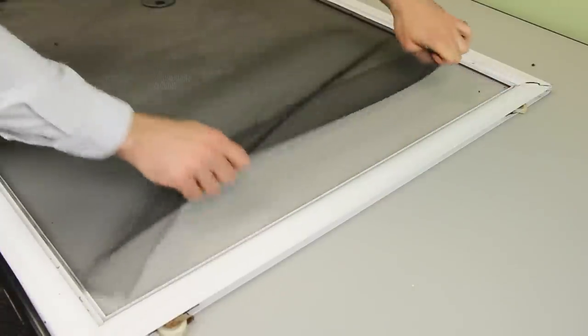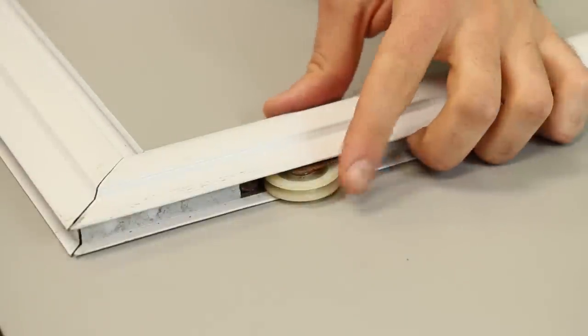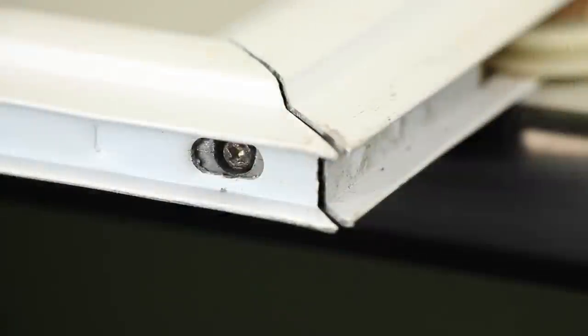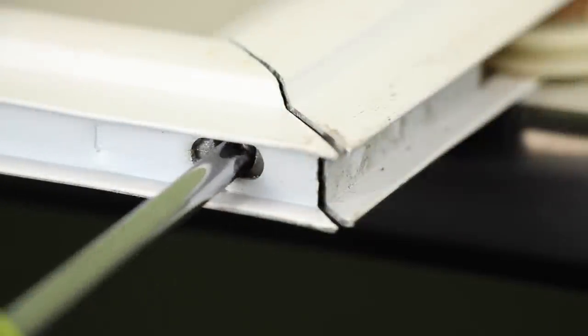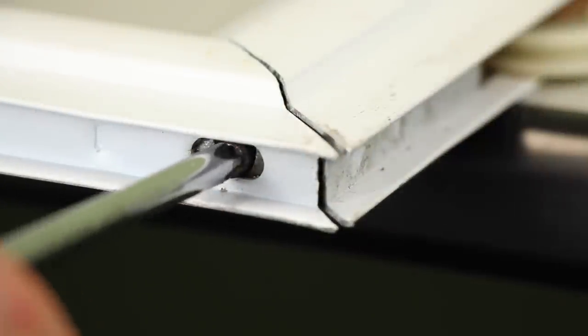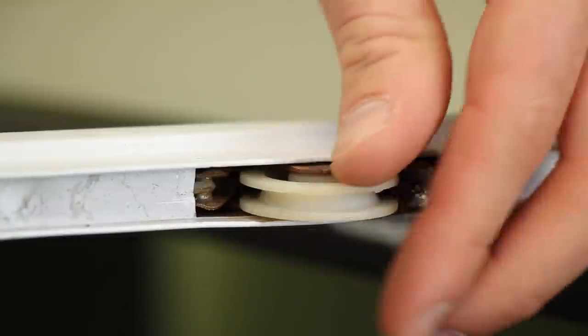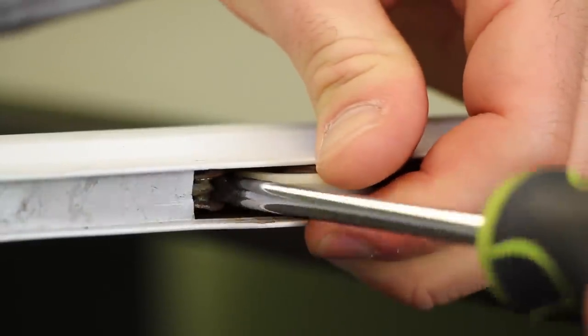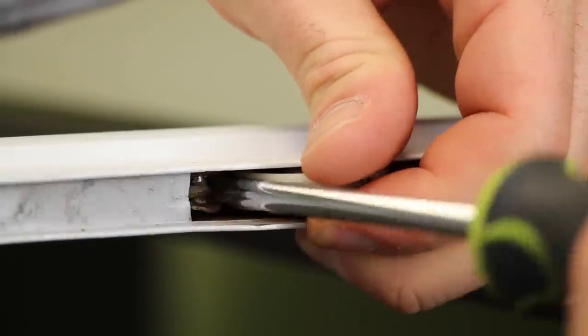Now before we can remove the original corners from the frame, we need to remove the rollers that are attached to the corners. First you'll want to loosen the adjustment screw and then release your roller. I like to use a Phillips head screwdriver in order to spread the roller housing away from the corner.